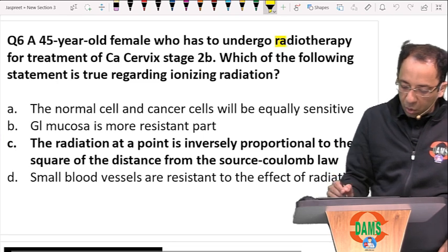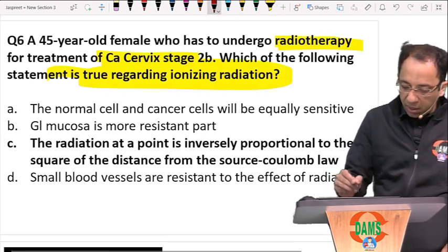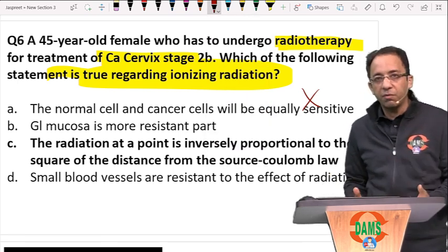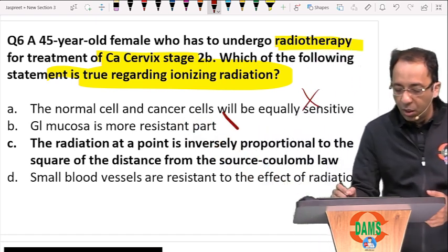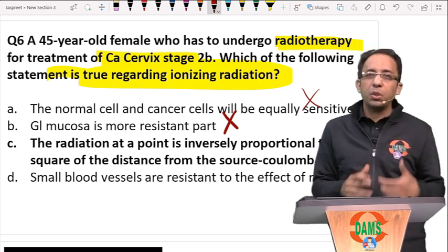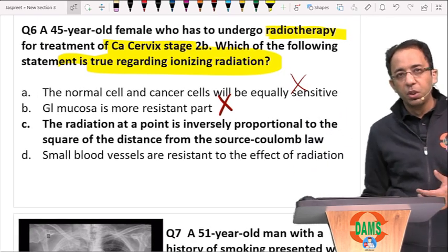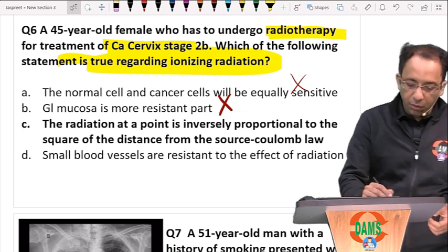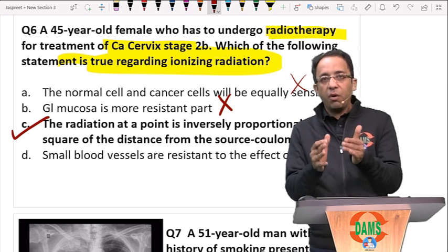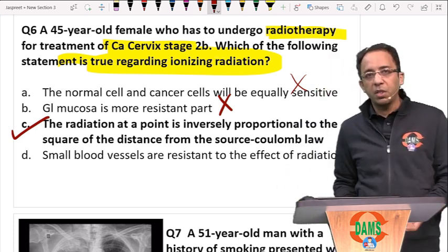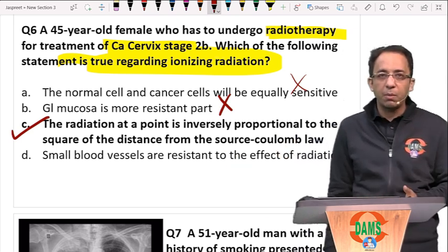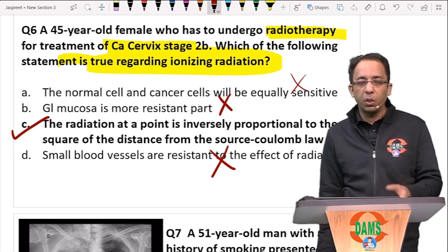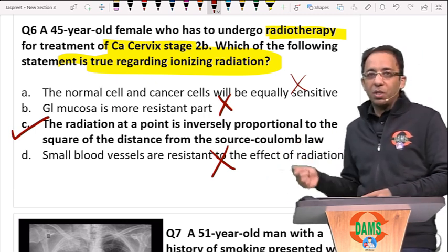Next: a lady undergoing radiotherapy for carcinoma cervix. Normal cells and cancer cells are not equally sensitive — rapidly dividing cells are more radiosensitive. GI mucosa is highly radiosensitive, not resistant, because it is rapidly dividing — that is the law of Bergonié-Tribondeau. The correct statement is: radiation intensity at a point is inversely proportional to the square of the distance — the inverse square law (Coulomb's law). This was a direct question from the DAMS TnD paper.